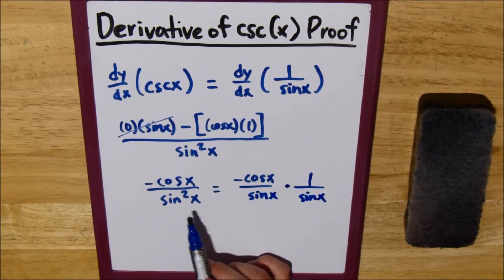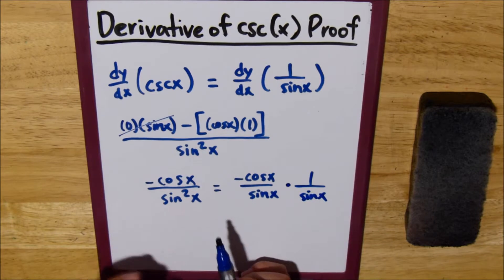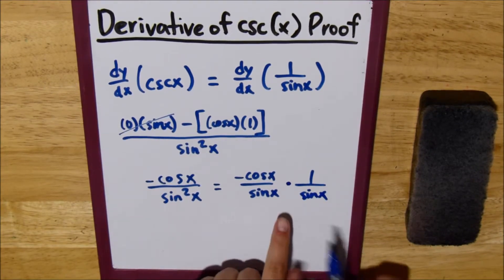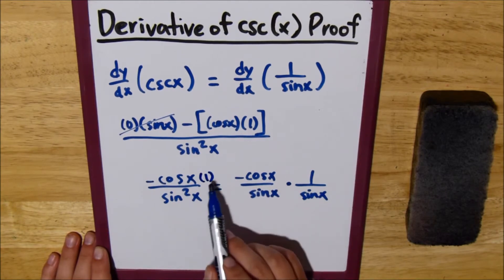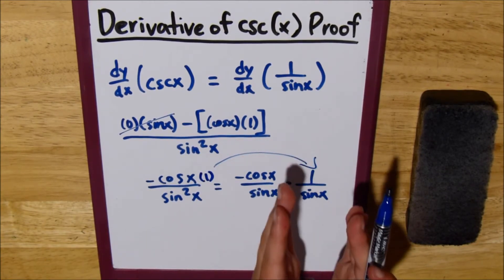So, essentially, we just took a sine of x out of the denominator, and we multiplied it across, and then we just took this imaginary one, and we made a whole other fraction.